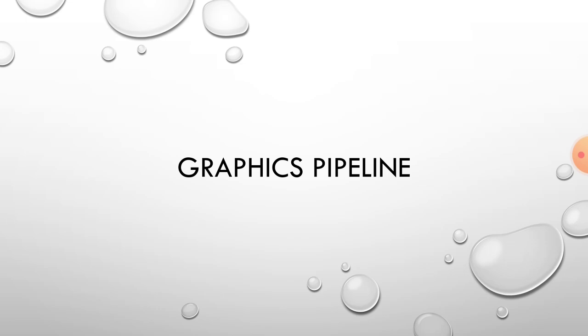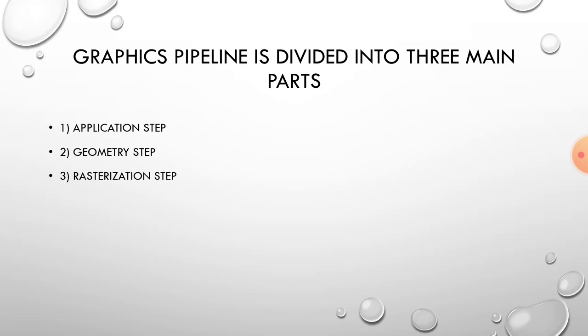Next we will see the three main parts of graphics pipeline. The three main parts of graphics pipeline are: application step, geometry step, and rasterization step.